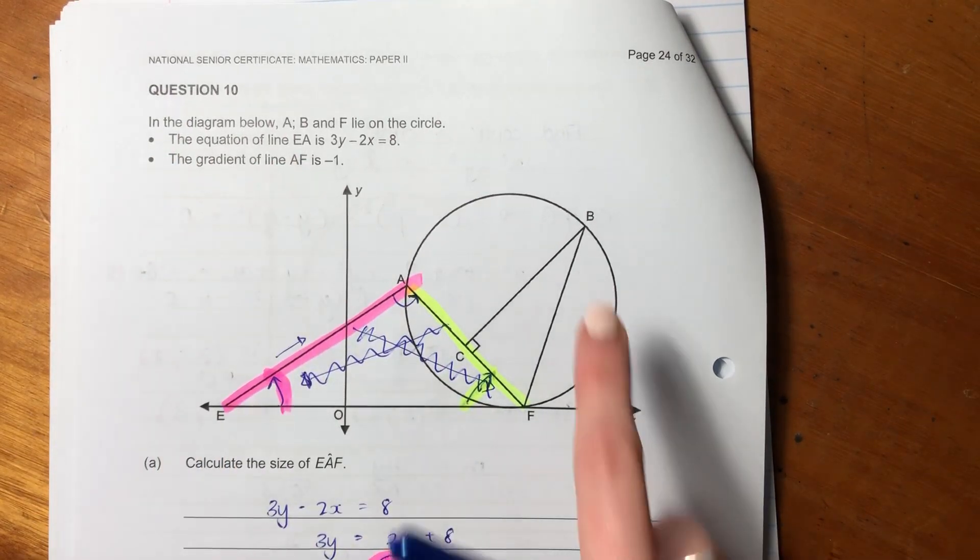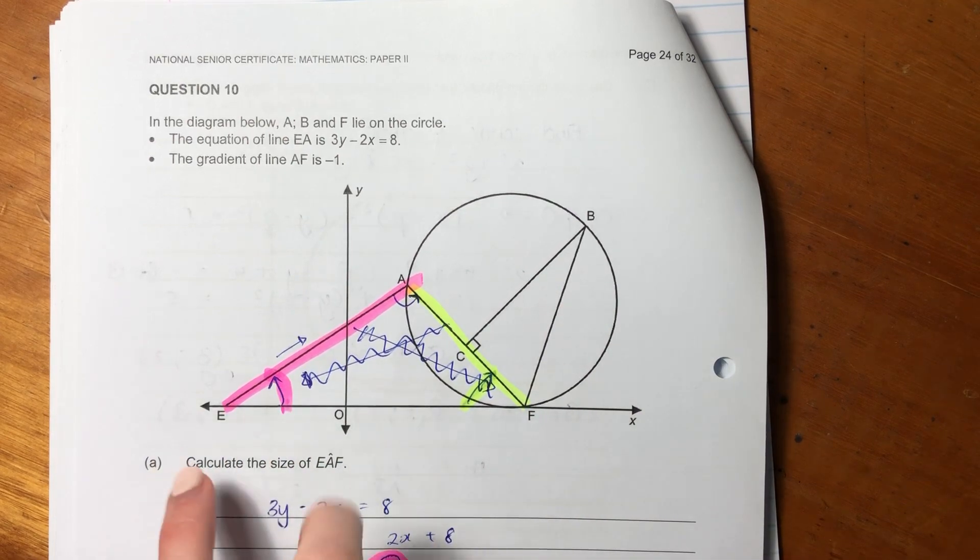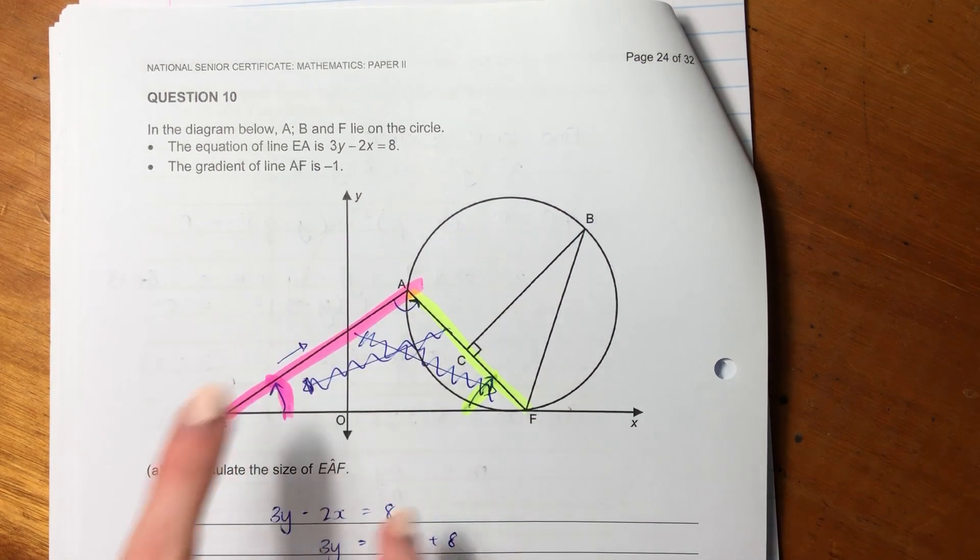So we're looking at a circle and two triangles. Let's read what information we have. In the diagram below, A, B, and F lie on the circle. The equation of the line EA is 3y - 2x = 8, and the gradient of the line AF equals negative 1.